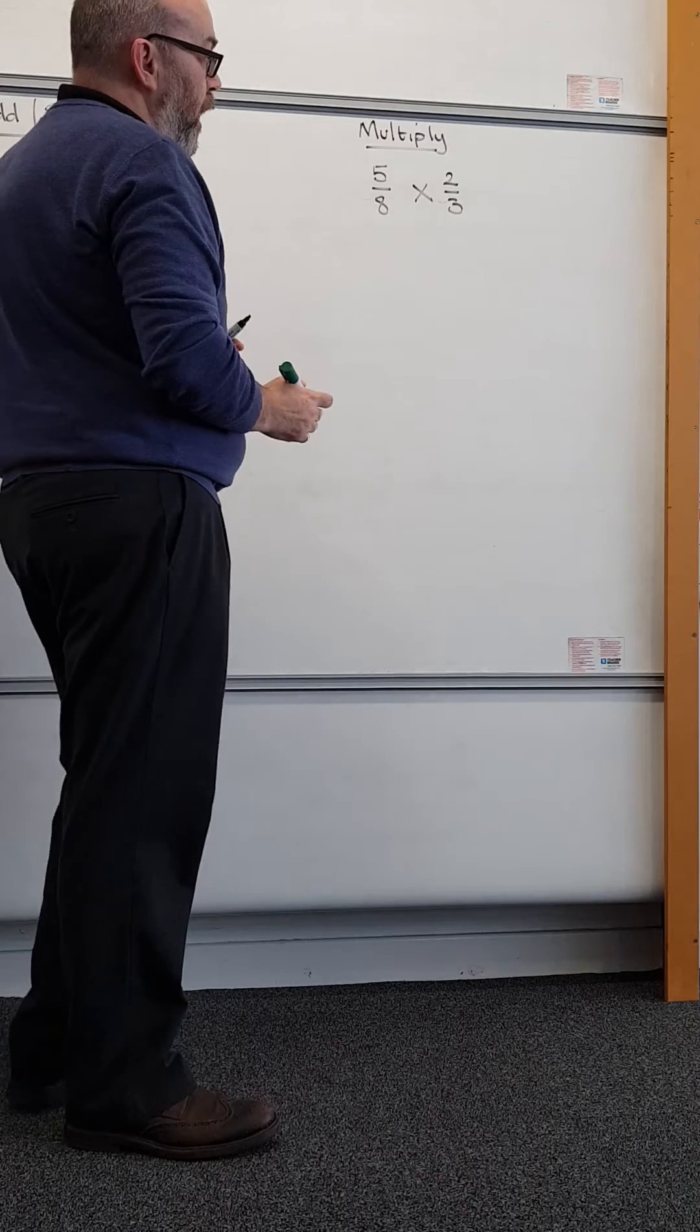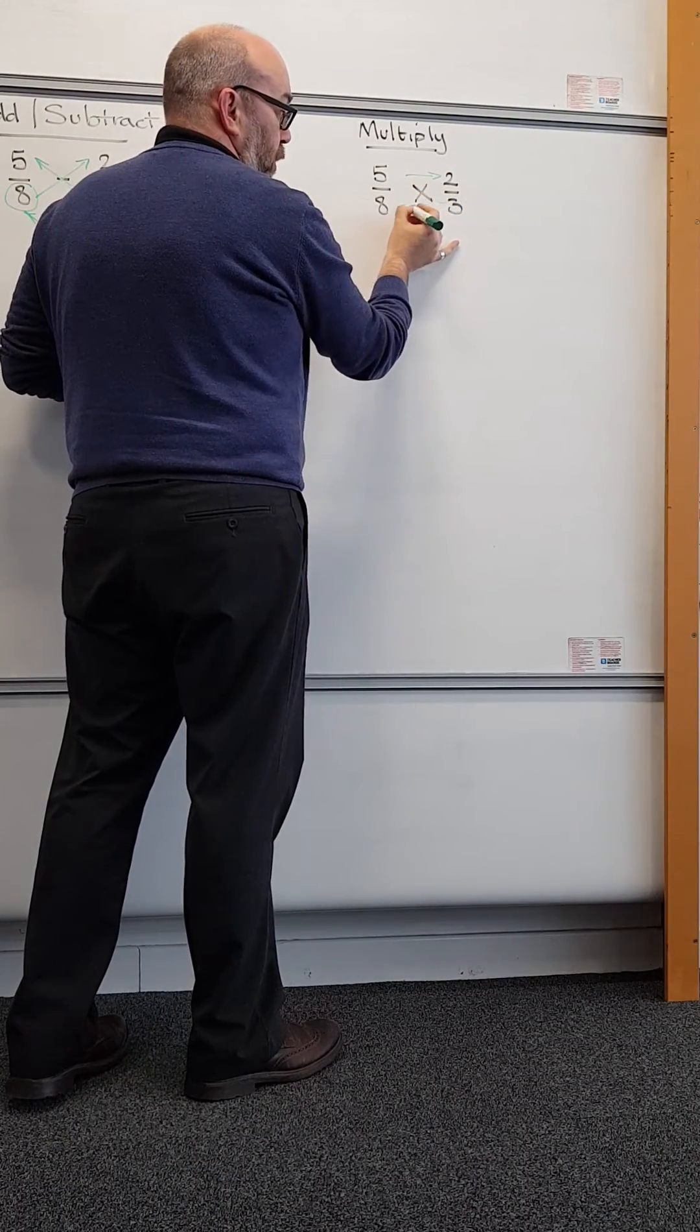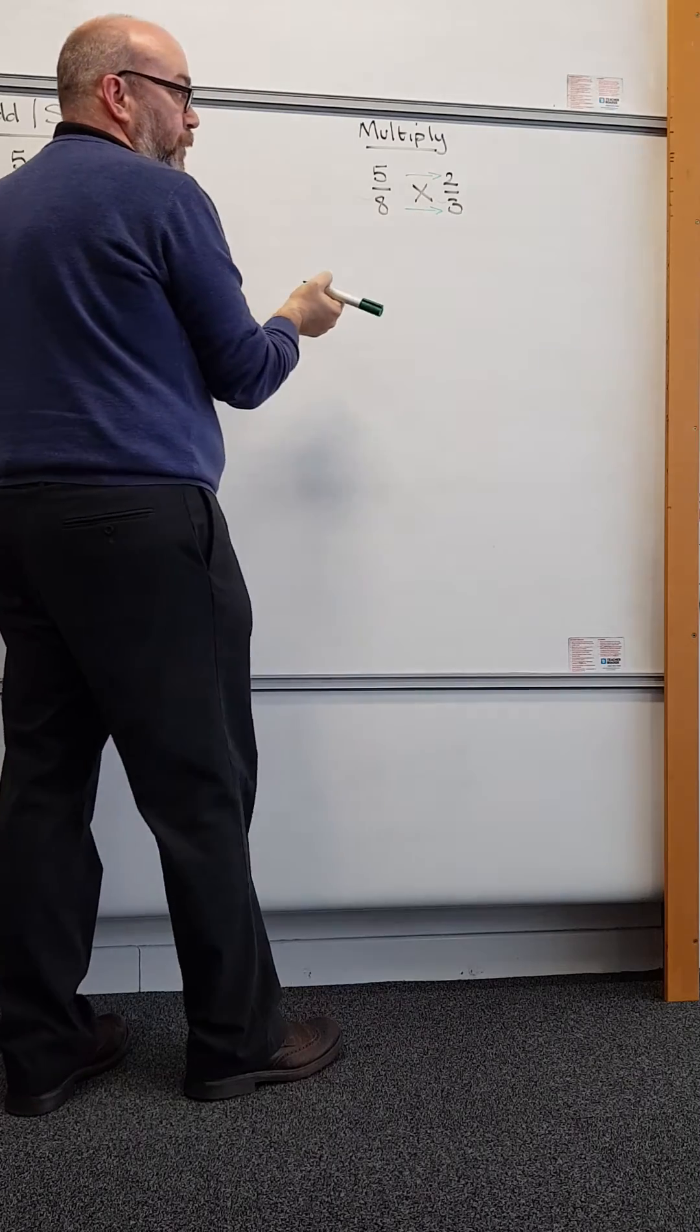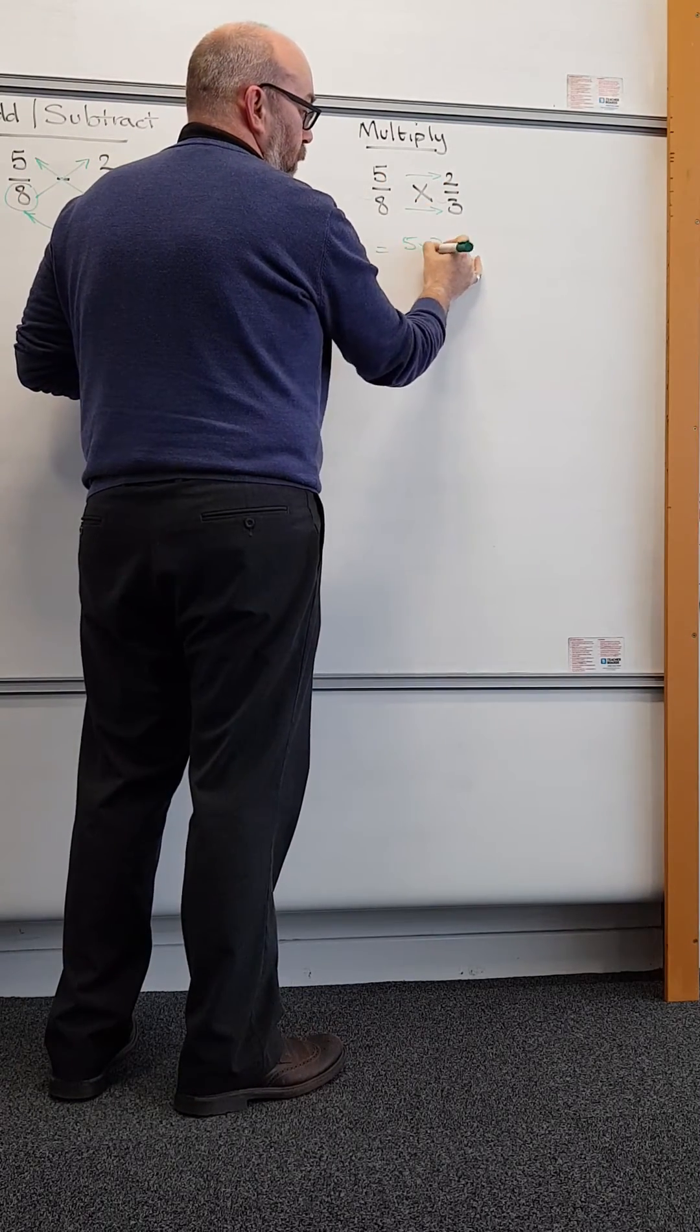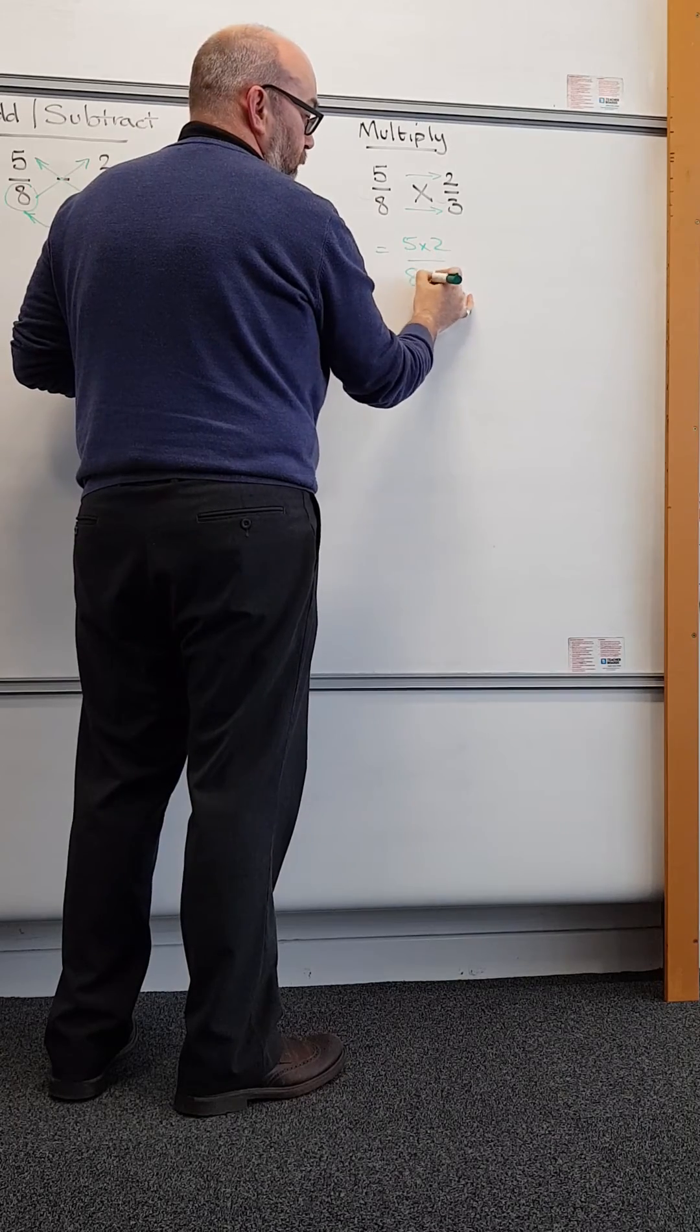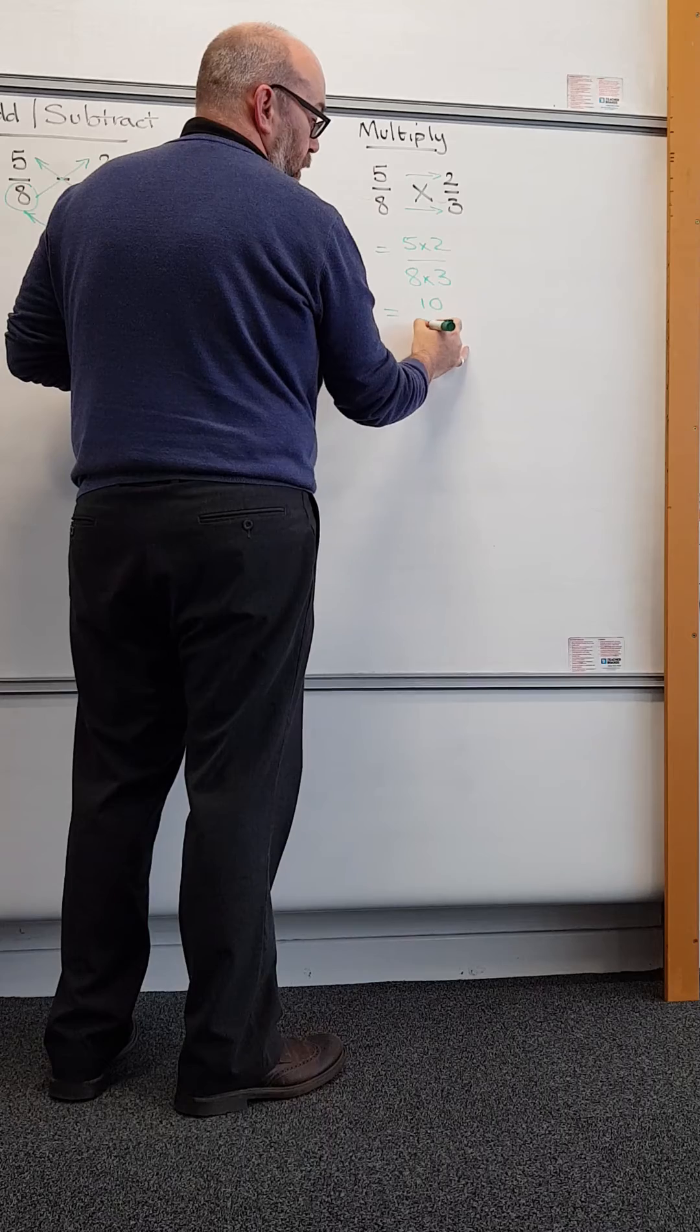Looking at multiplying, we quite simply multiply across. The tops multiply and the bottoms multiply. 5 times 2 over 8 times 3. So that's going to be 10 over 24.